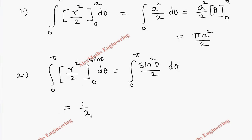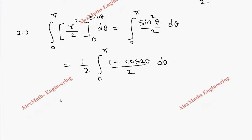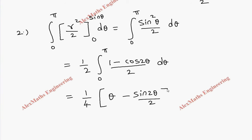We can take 1/2 outside as a constant, and we are left with the integral 0 to pi of sin²θ. But sin²θ can be written as (1 − cos 2θ) / 2 using the trigonometric formula. So we have 1/4 outside, and the integration of 1 with respect to θ is θ, minus cos 2θ whose integration is − sin 2θ / 2.